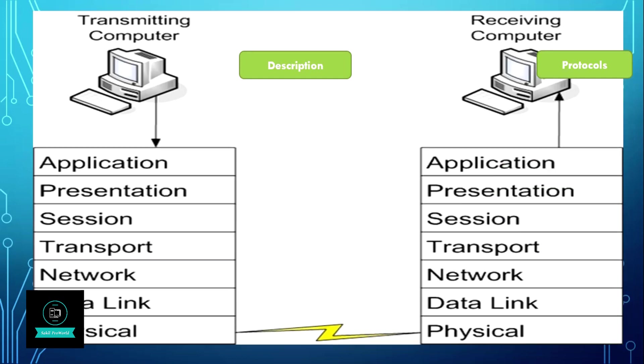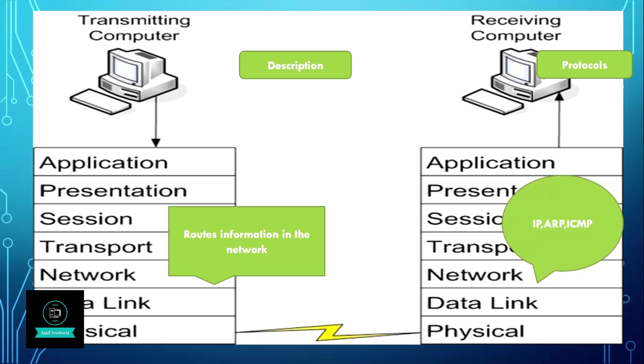The third layer is the network layer. It routes information in the network and works on protocols such as IP, ARP, and ICMP.